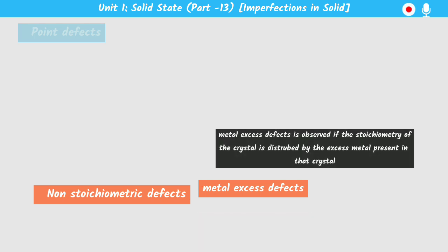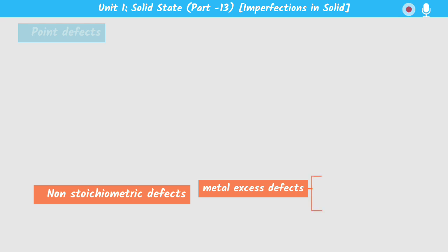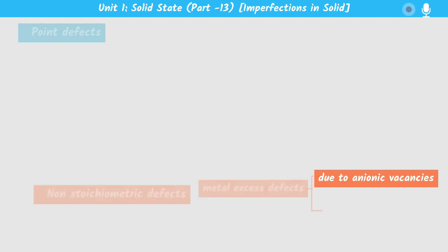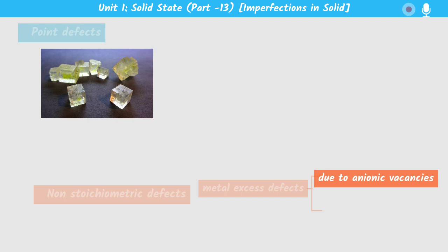Metal excess defect is a non-stoichiometric defect, meaning the stoichiometry of the crystal is disturbed due to excess metal present. Metal excess defects are further classified into two subclasses. The first is metal excess defects due to anionic vacancies. Alkali halides like sodium chloride and potassium chloride exhibit this type of defect. For example, if we heat sodium chloride crystals in an atmosphere of sodium vapor, some sodium from the vapor deposits on the crystal.